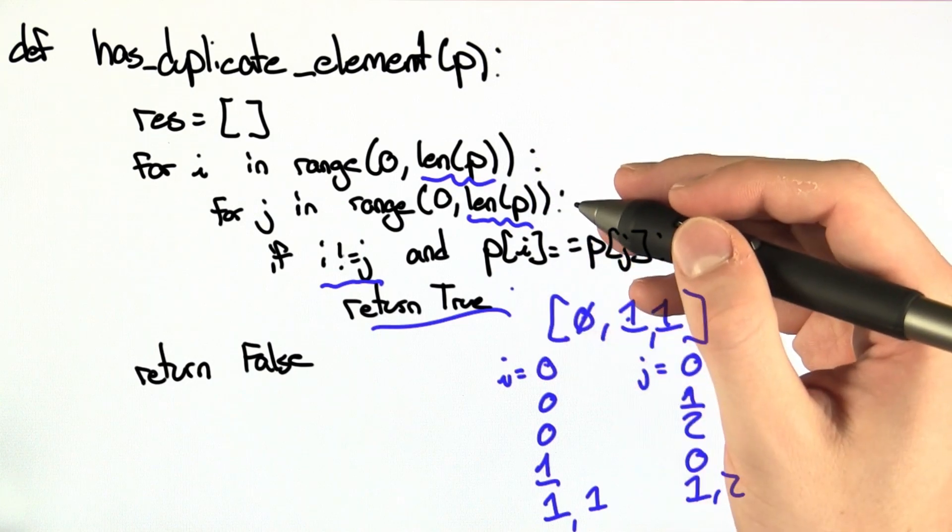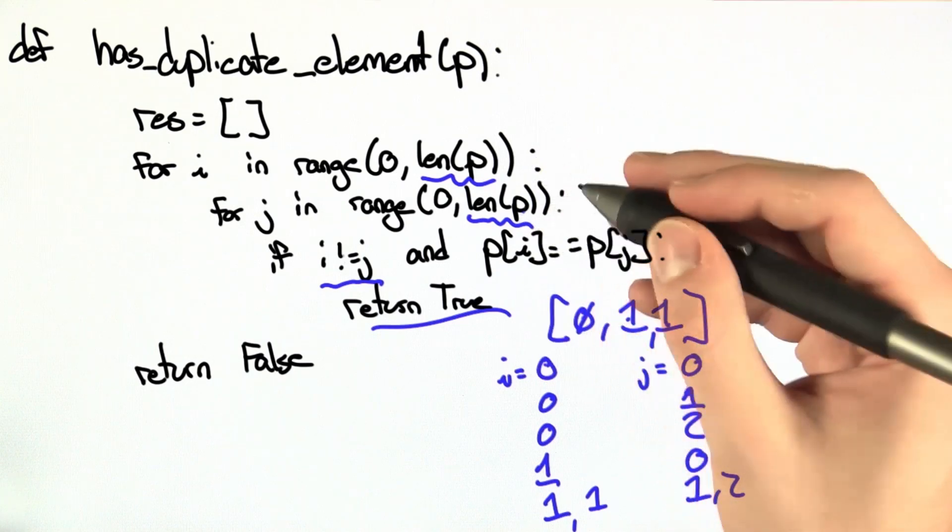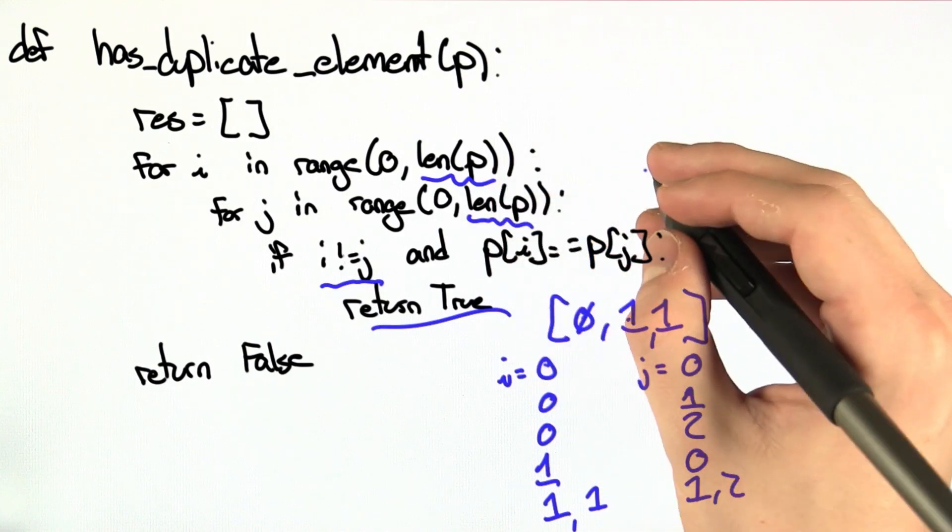Namely, if we double the number of elements in p, we're going to increase the runtime of the entire procedure by a factor of 4.